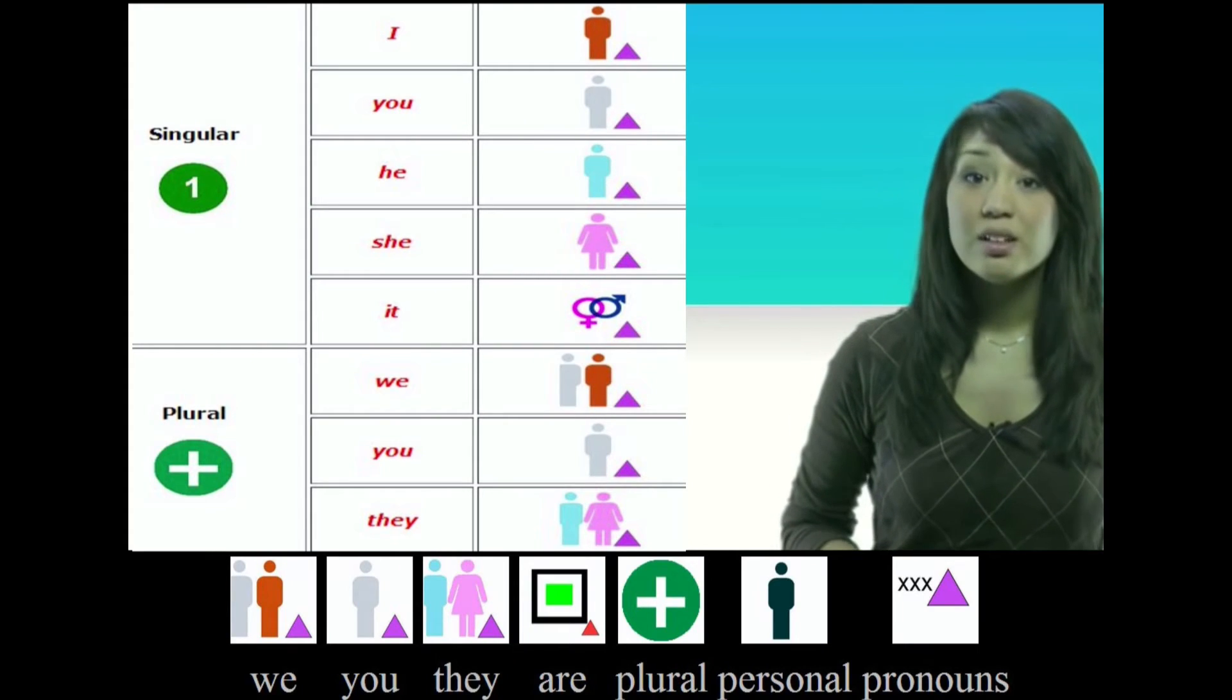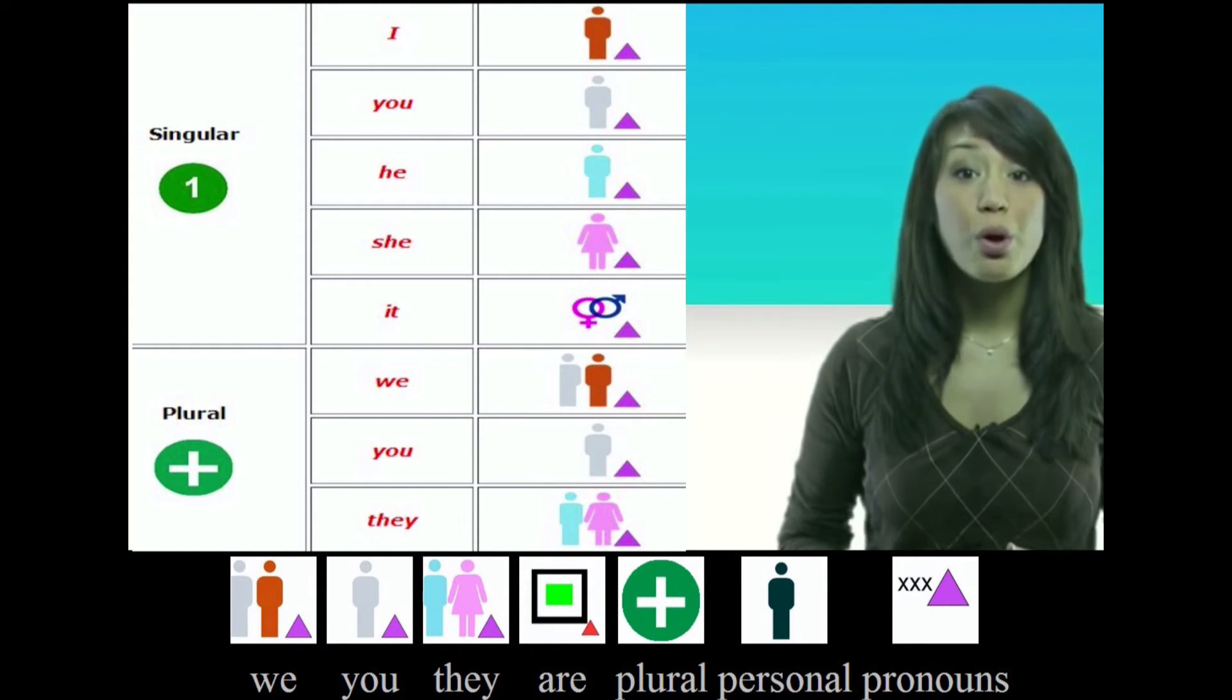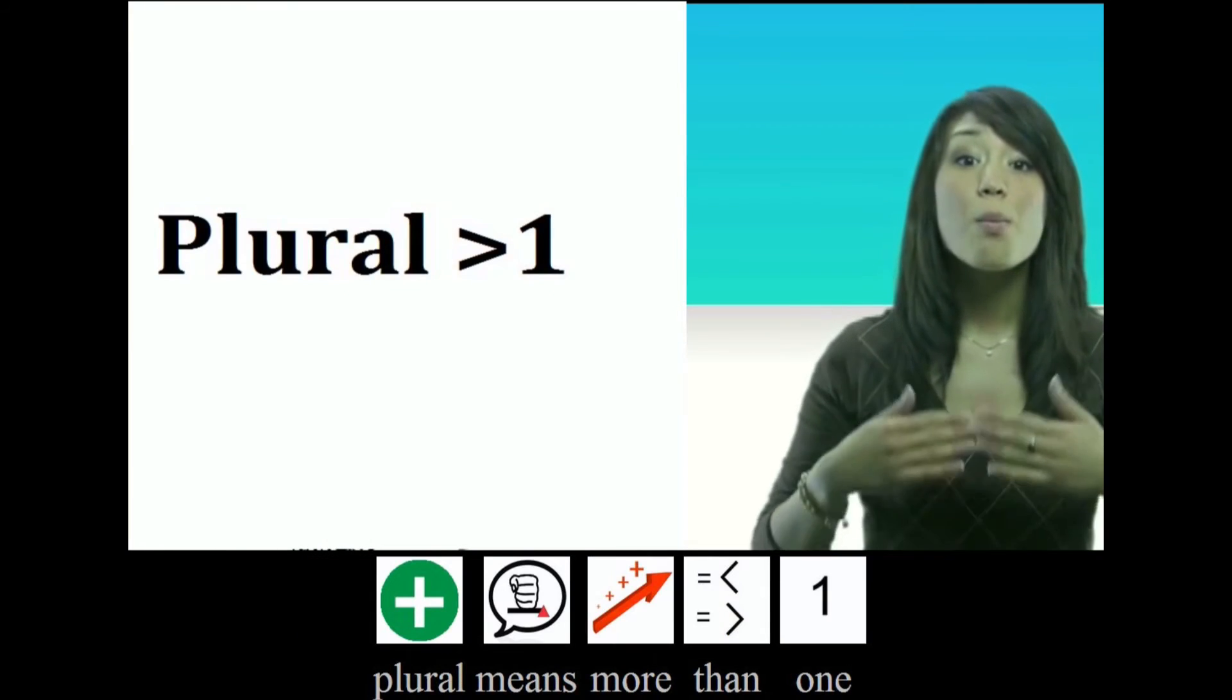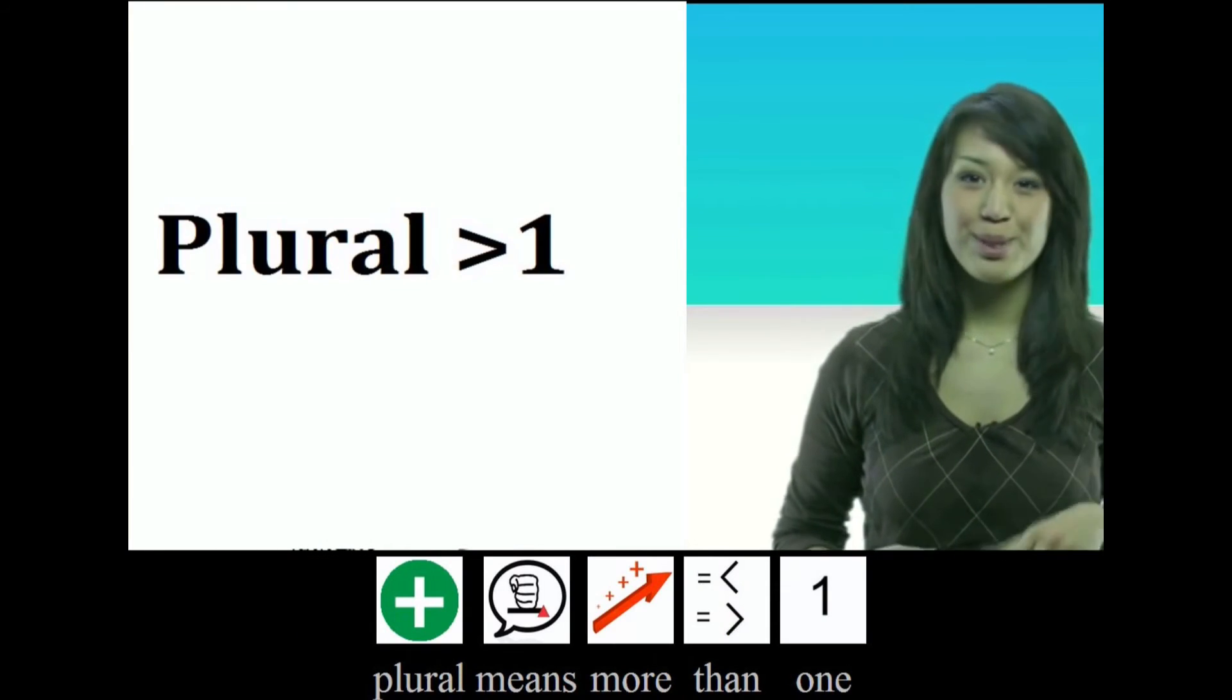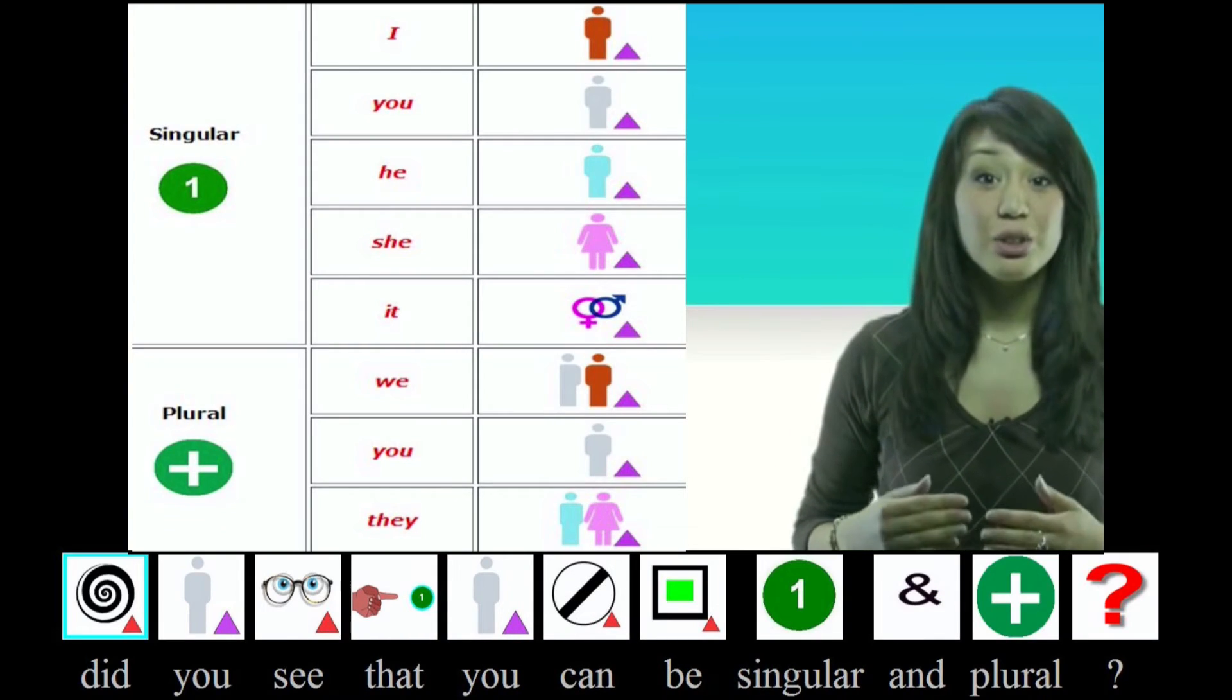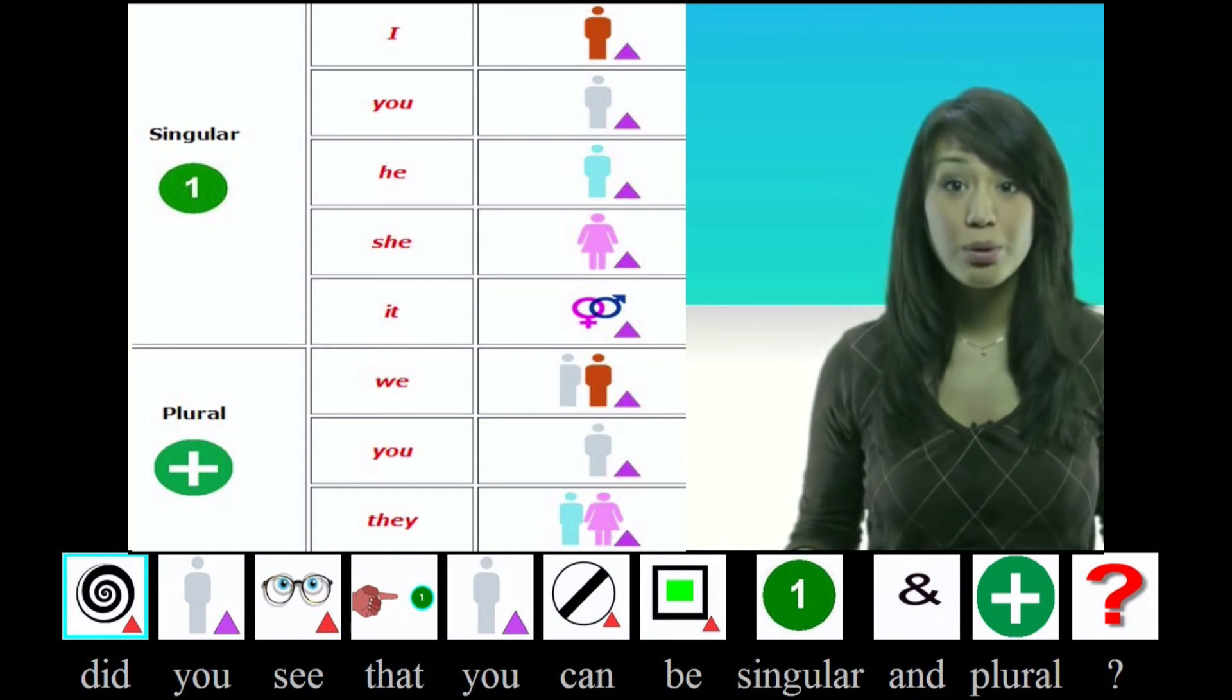We, you, they are plural personal pronouns. Plural means more than one. You knew that, right? Did you see that you can be singular and plural?